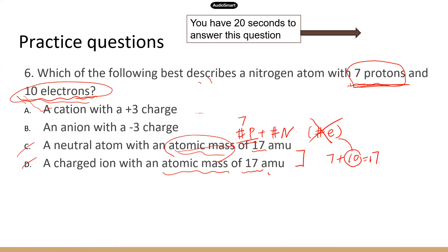There are seven protons, so nitrogen should have seven electrons. But it says here there are 10 electrons — that's three more than it should be. So this nitrogen atom has gained three electrons. Once it gains three electrons, it becomes a nitrogen ion and it's going to carry a negative three charge, because it gained electrons which have negative charge. So the correct answer is B.